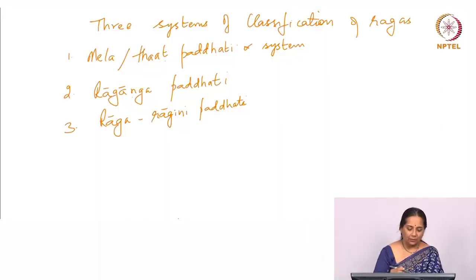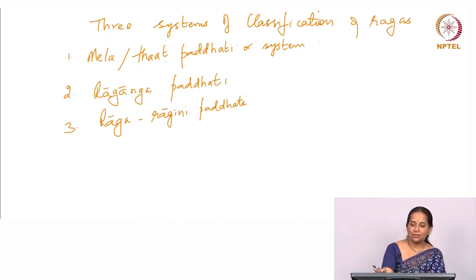From medieval texts onwards — even earlier — ragas are classified along various lines. A raga is a complex thing: it is characterized by the presence or absence of swaras, but there are many other things about it, such as its melodic personality, the phrases that are typical in the raga, the way it moves, and even the ornaments. We can classify ragas along these various parameters. In Hindustani music, there are three well-known systems of classification: the Mela or That Paddhati, the Raganga Paddhati, and the Raga Ragani Paddhati.